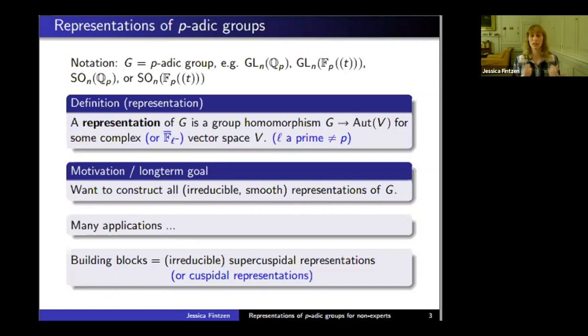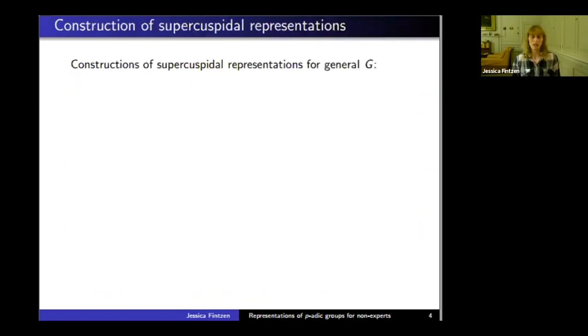These supercuspidal representations are very mysterious and difficult to write down. In the case of GL_n, we luckily know everything by now—meaning we know how to write down these representations. It started over 50 years ago by work of Howe and Moy and was finished by Bushnell and Kutzko more than 25 years ago.